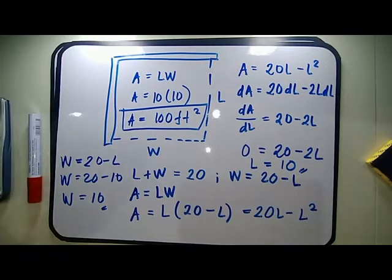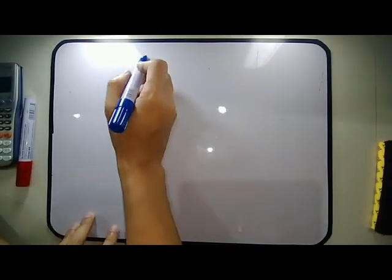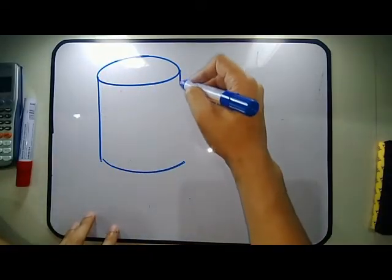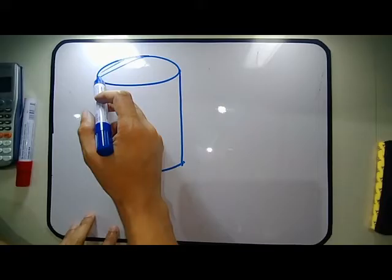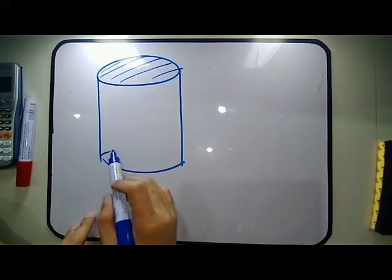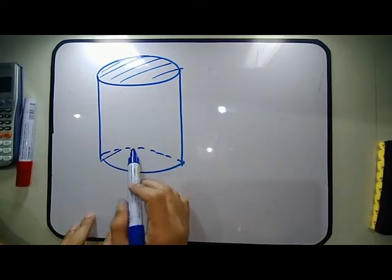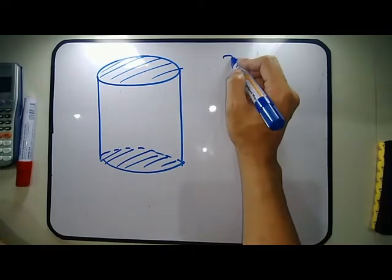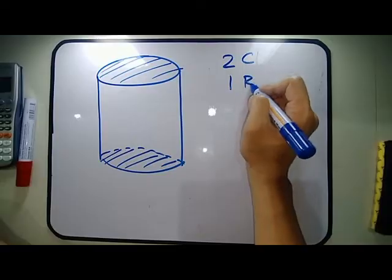Next problem: determine the diameter of a closed cylindrical tank having a volume of 11.5 cubic meters to obtain the minimum surface area. We have a cylinder that is closed — it has a top and a bottom. The surface area of the cylinder is composed of two circles (top and bottom) and one rectangle.